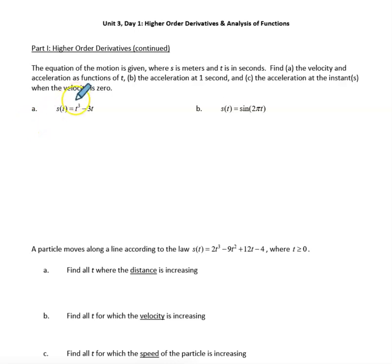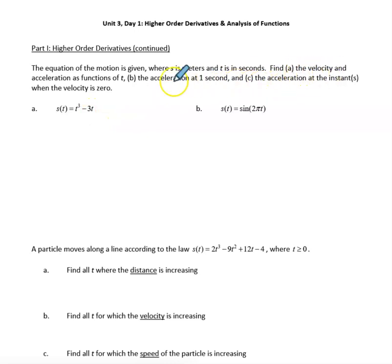We have a position function s which equals t cubed minus 3t, and what we're asked to do is first find the velocity and the acceleration functions — that's just the first and second derivative.